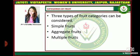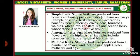There are three types of fruit categories: Simple Fruits, Aggregate Fruits, and Multiple Fruits. Simple Fruits are produced from flowers containing just one pistil, which contains an ovary. Examples of Simple Fruits are Apples, Avocados, Bananas, Beans, Cherries, Olives, Peas, Tomatoes, Walnuts, and Wheat.